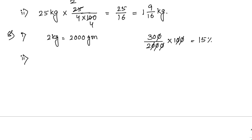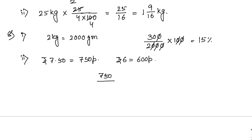Number two: rupees 7.50 of rupees 6. Convert both to paise: 7.50 rupees equals 750 paise and 6 rupees equals 600 paise. Write 750 by 600 into 100, which simplifies to 750 by 6, equal to 125 percent.